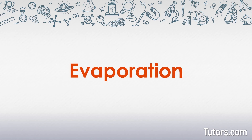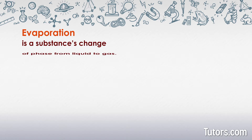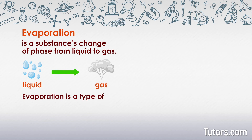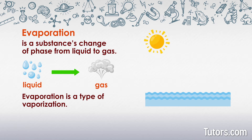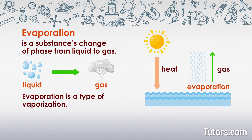What is evaporation? Evaporation is a substance's change of phase from liquid to gas. It is a type of vaporization. It occurs in nature when molecules of a liquid gain sufficient kinetic energy, often from sunlight, to move apart and enter the atmosphere as a gas.